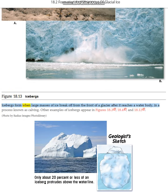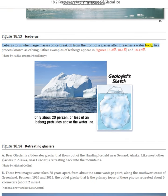Icebergs form when large masses of ice break off from the front of a glacier after it reaches a water body, in a process known as calving.